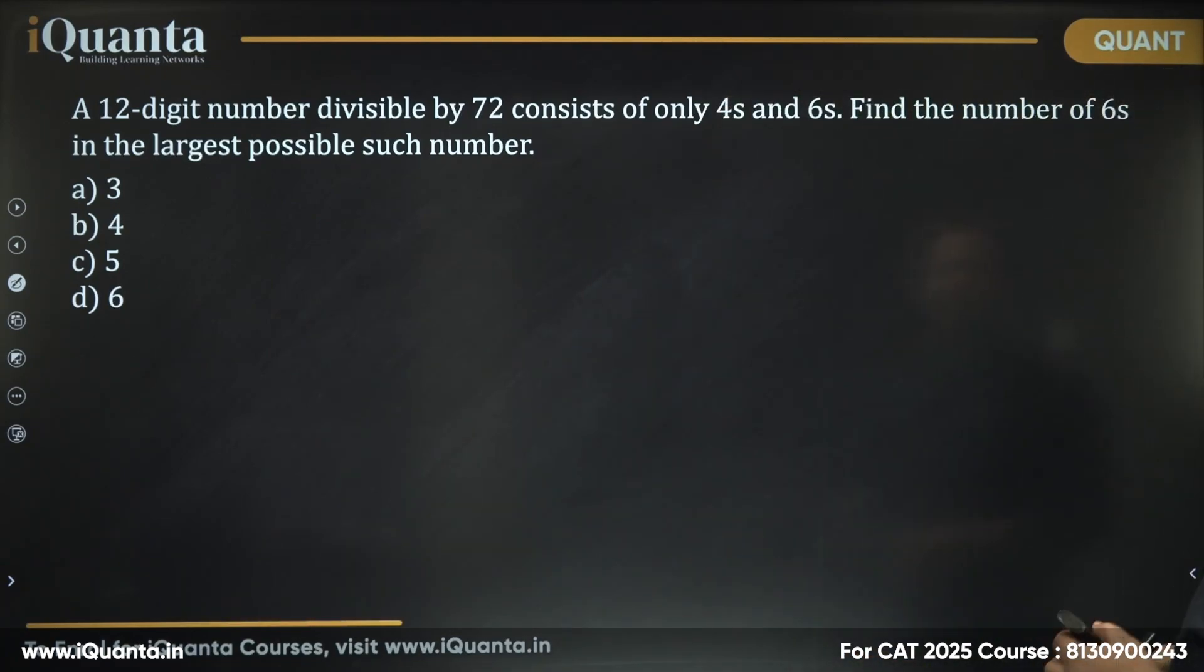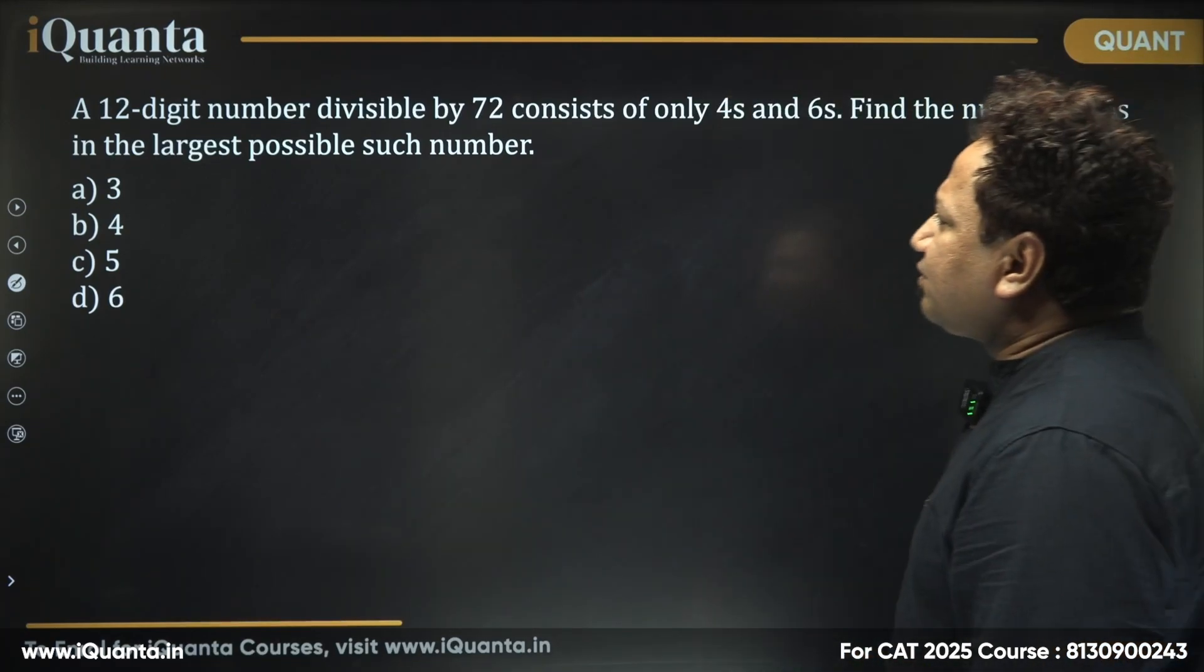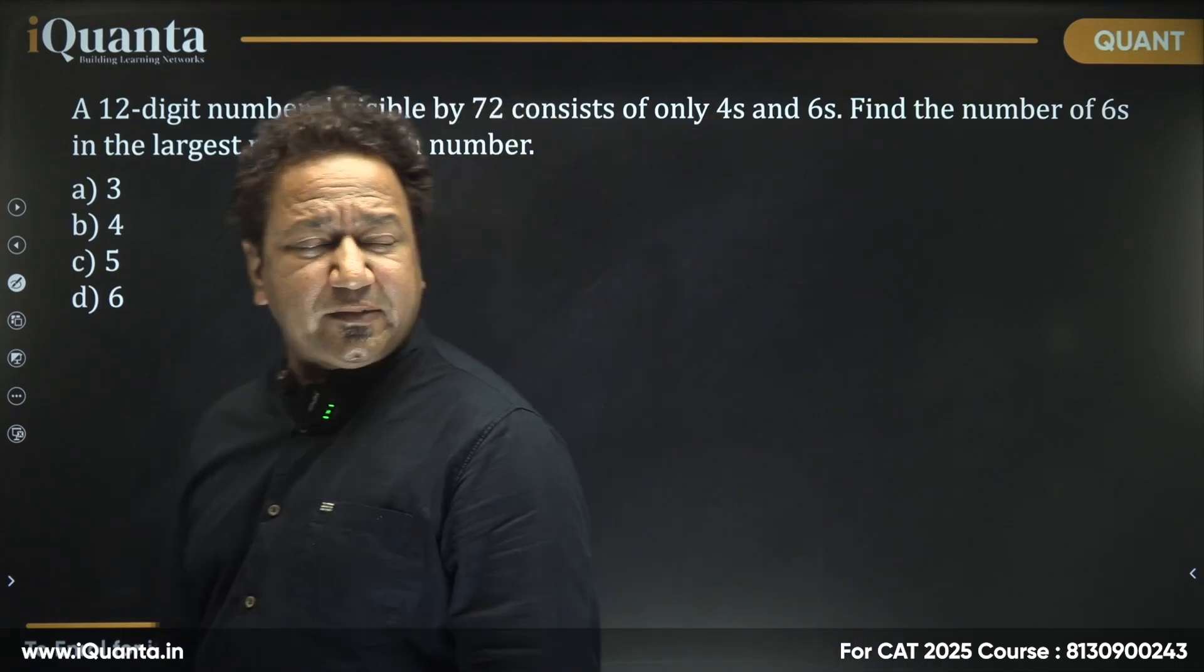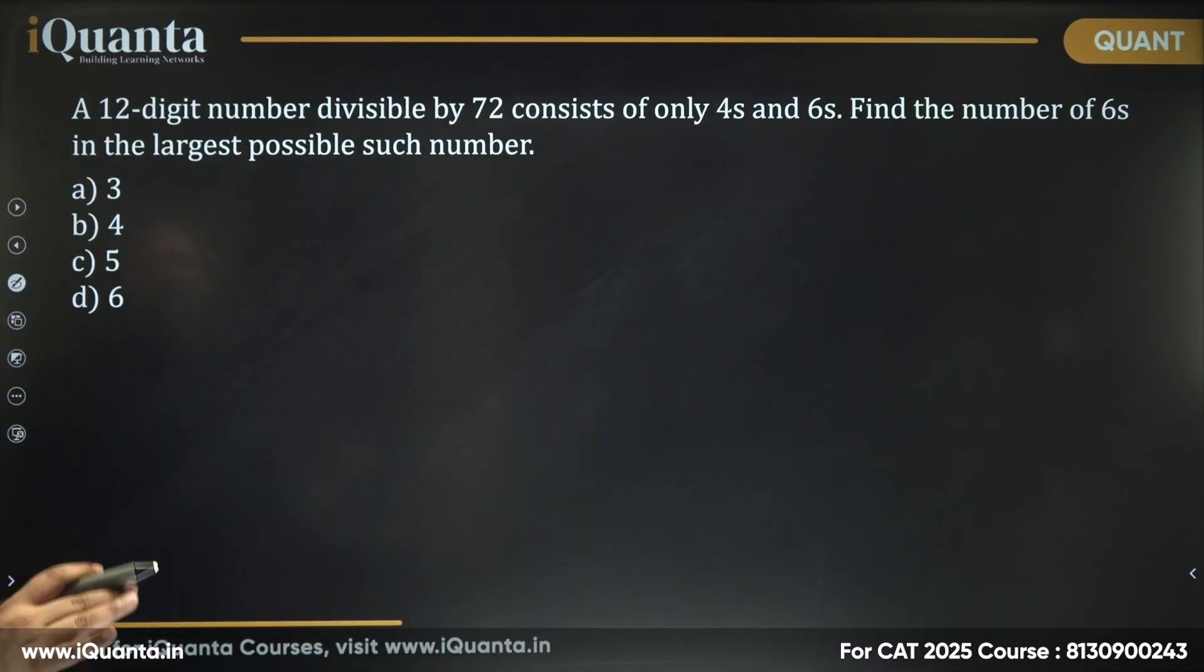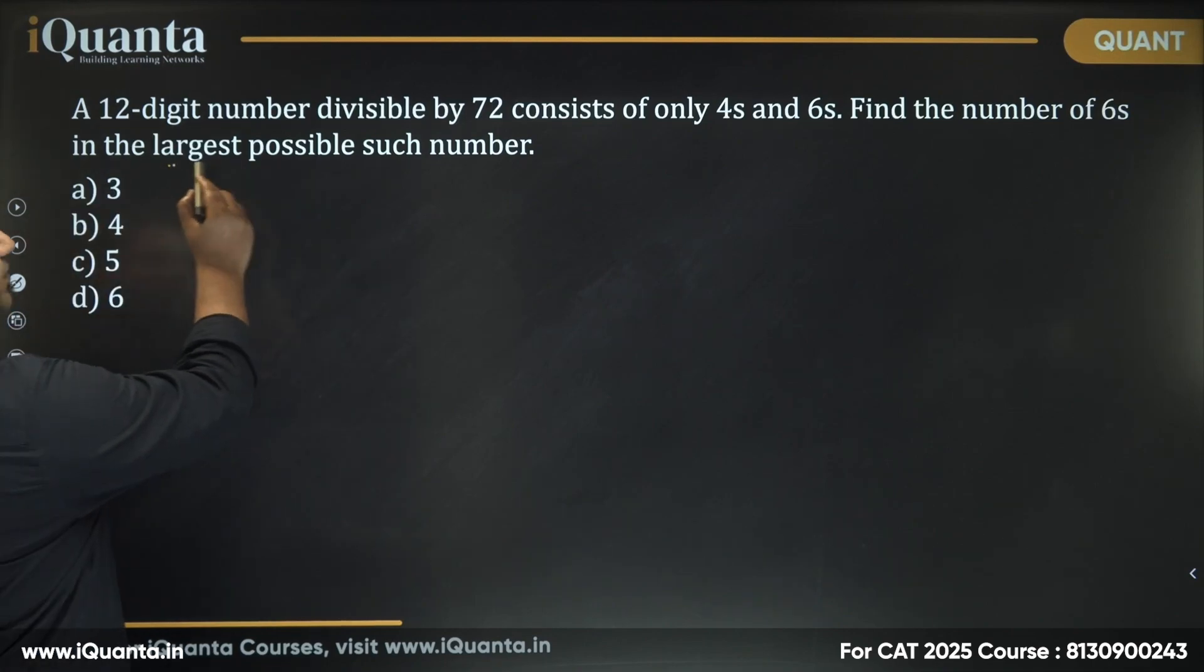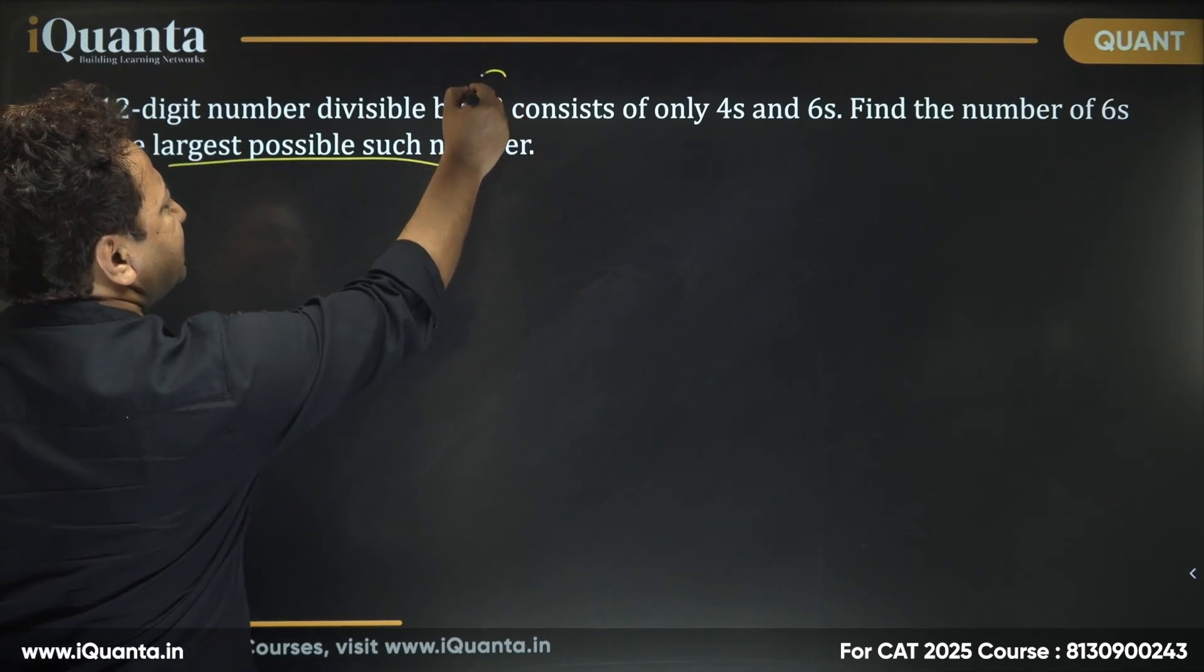It says a 12-digit number divisible by 72 consists of only 4s and 6s. Find the number of 6s in the largest possible such number. Largest possible such number. Which number? That is divisible by 72.